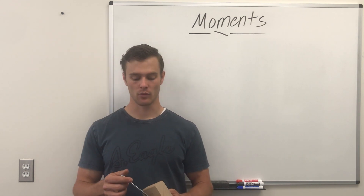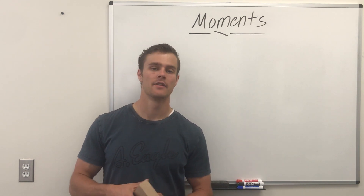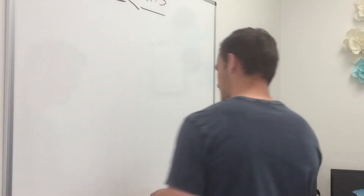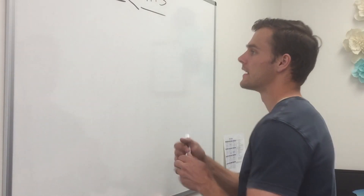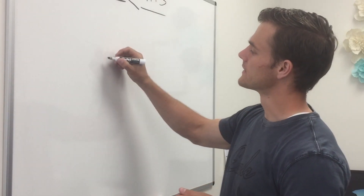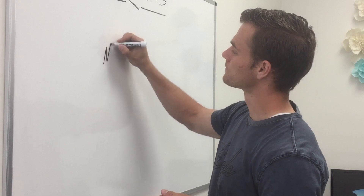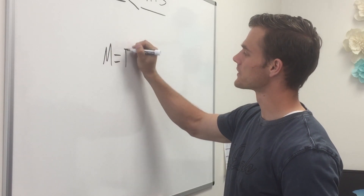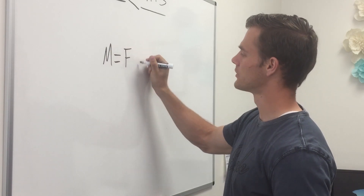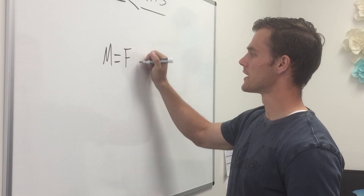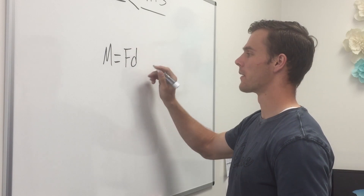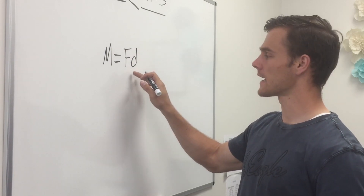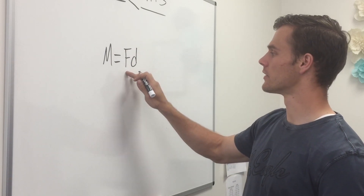We can write that a moment — we'll call it M — is the magnitude of the force times the moment arm, which is the distance from the axis to the force.